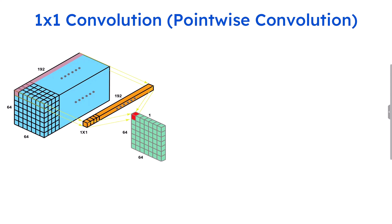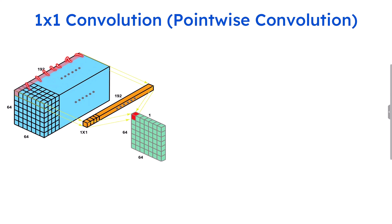So what's the purpose of doing this 1x1 convolutional filter? It is actually used to perform linear combinations between channels to get the inter-channel information. If you have a large number of channels in your image, you can apply a 1x1 convolution to get the information between these inter-channels.